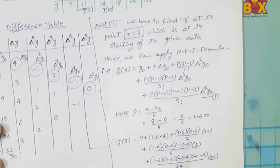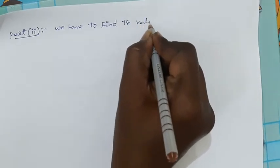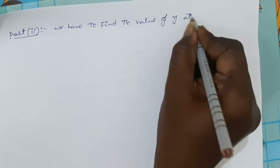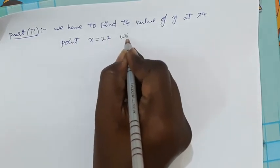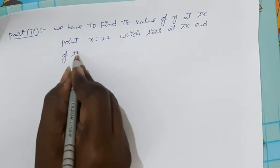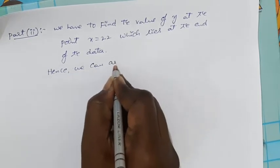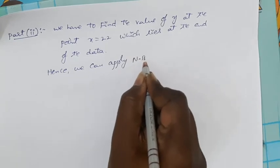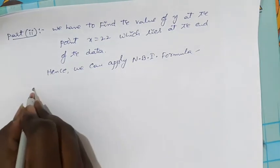In Part 2, we have to find the value of y at x equal to 22, which lies at the end of the data. Hence we apply Newton's backward interpolation formula.